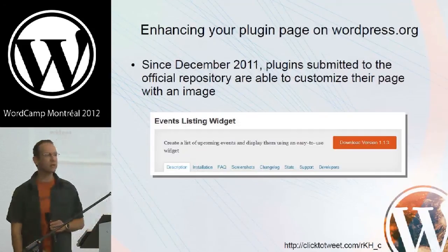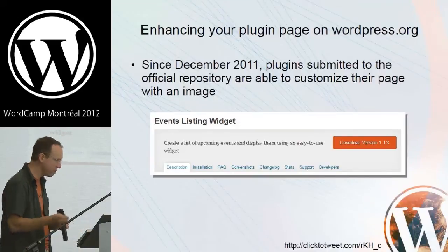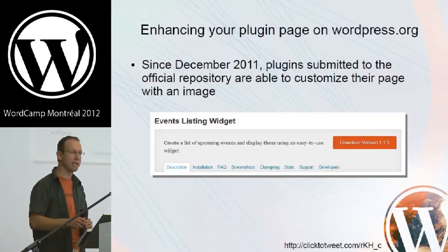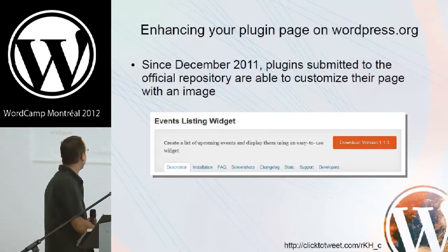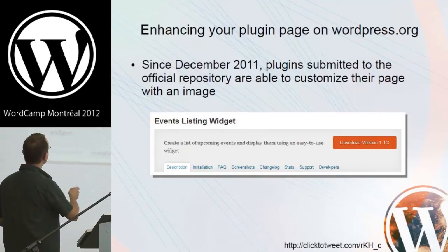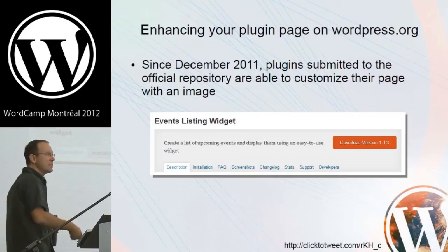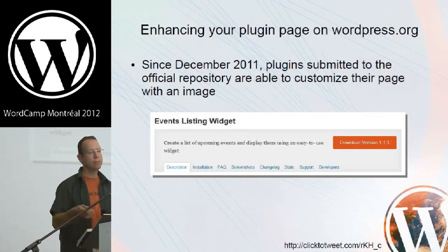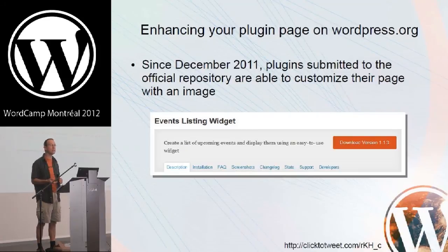Last but not least, I wanted to show how you can enhance your plugin page on WordPress.org. If you've ever gone through the work of creating a plugin and posting it on WordPress.org, you might have seen a basic page with your plugin's name, a little description, and a download button. Over the last eight months or so, a lot of plugins have started to have very nice images on their plugin pages on the repository — something you can do yourself as a plugin developer, once you know exactly what the steps are.